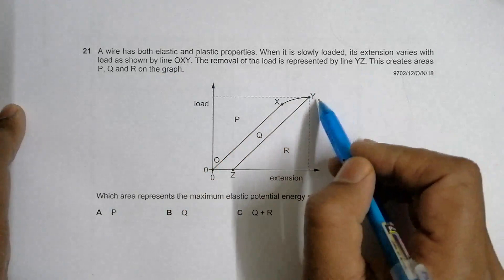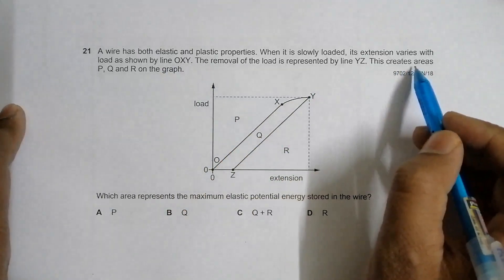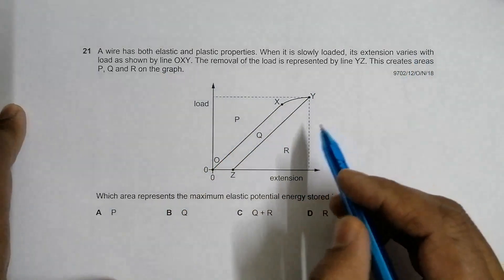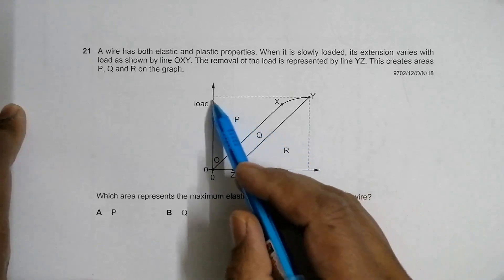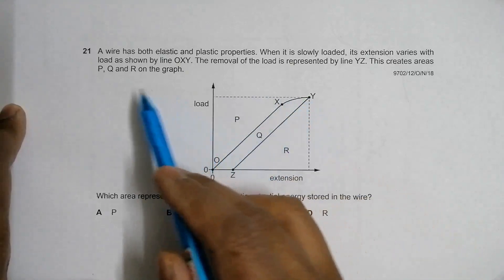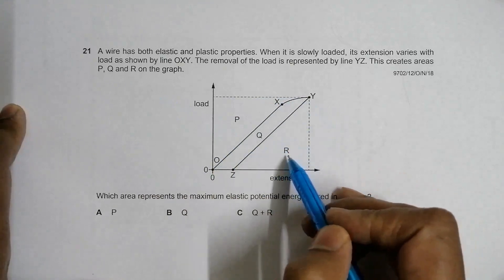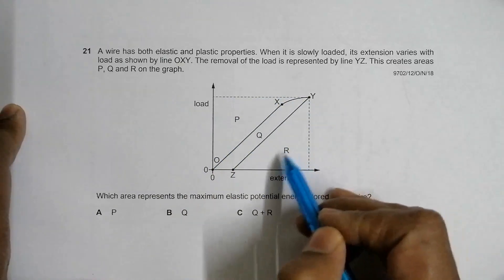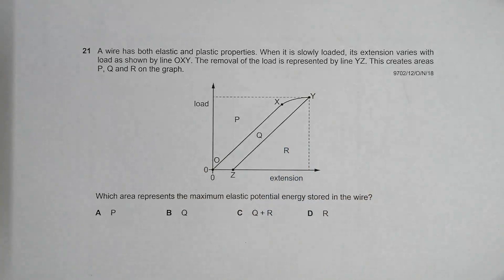The removal of the load is represented by line YZ. This creates areas P, Q, and R on the graph. Area P appears like this, Q is somewhat like this, and R is here. Which area represents the maximum elastic potential energy stored in the wire?